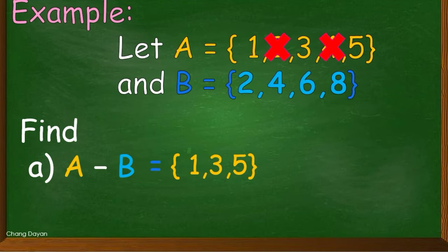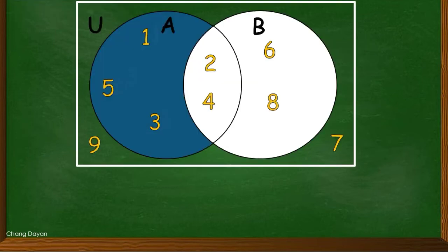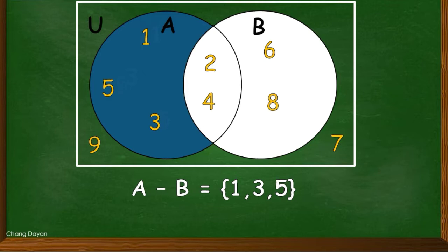Now let us consider this one. So in our Venn diagram, A minus B equals 1, 3, 5. The region where 1, 3, 5 is located is the one that we shaded.